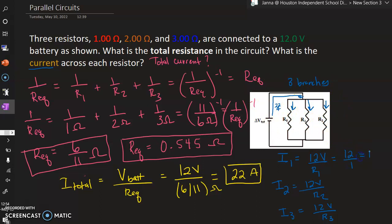That's 12 amps of current. So 12 amps flow through R1. For R2, that's 12 over 2 ohms. That's 6 amps of current passing through R2, and then through R3, that's 12 over 3 ohms. That's 4 amps of current passing through R3.